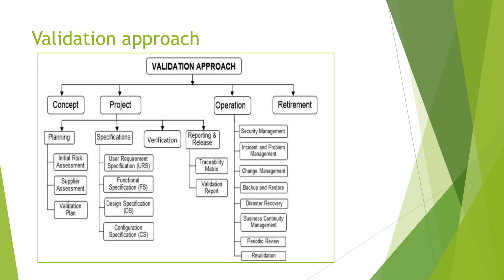Once the verification phase is complete, we move to the reporting and releasing phase. A key document here is the traceability matrix, which is critical in CSV. The traceability matrix is the only evidence that confirms all user requirements and specifications have been covered in the IQ/OQ/PQ protocol documents. It provides clarity that nothing has been missed.